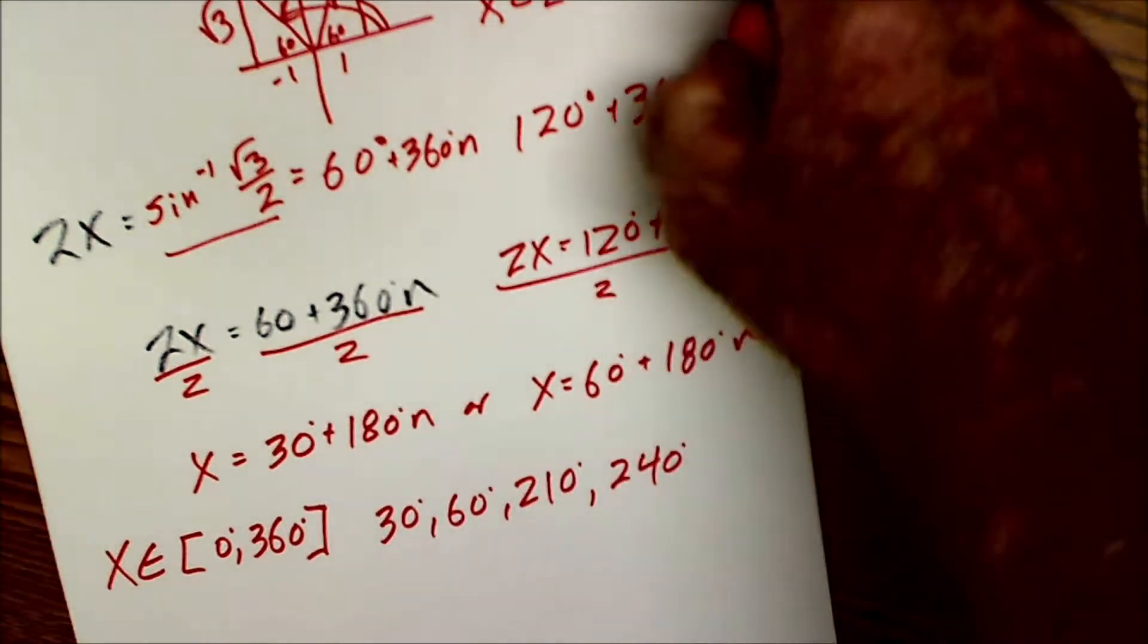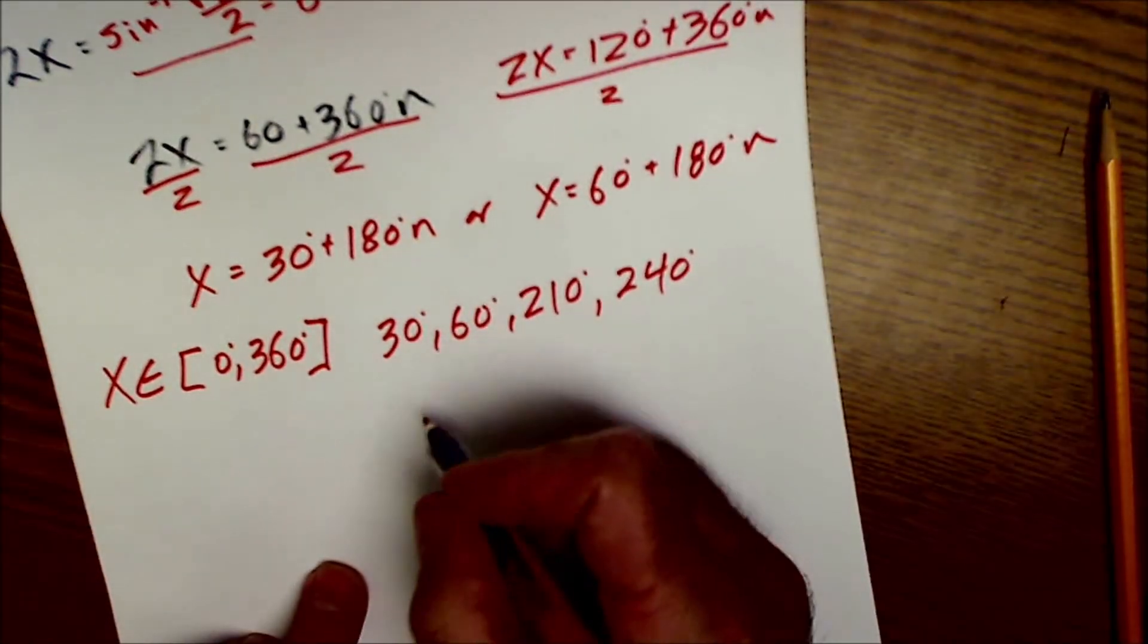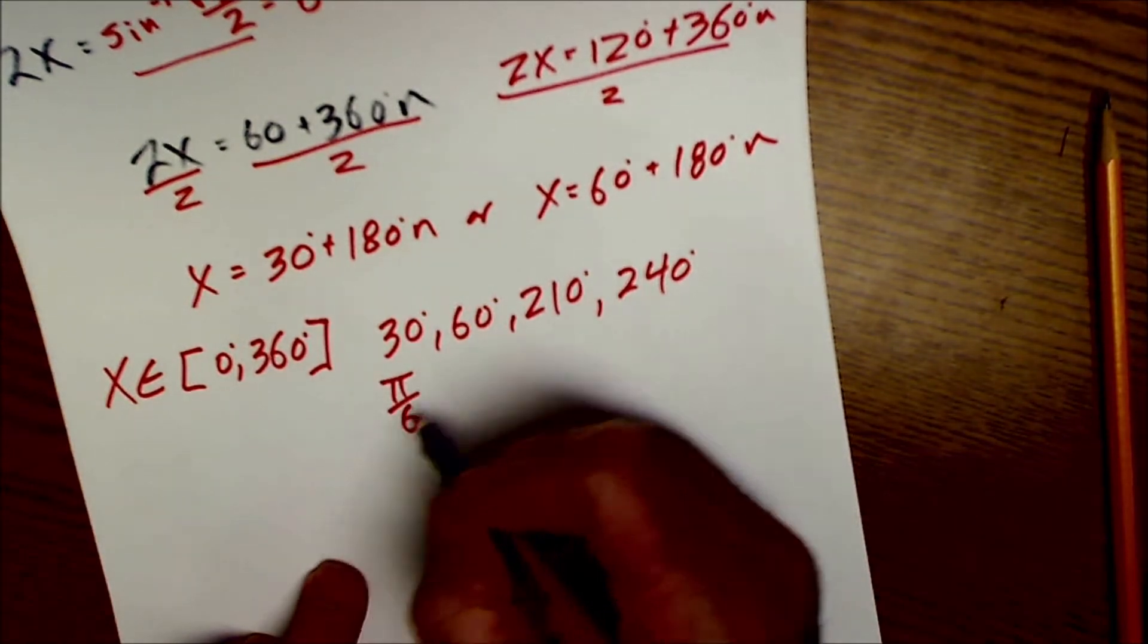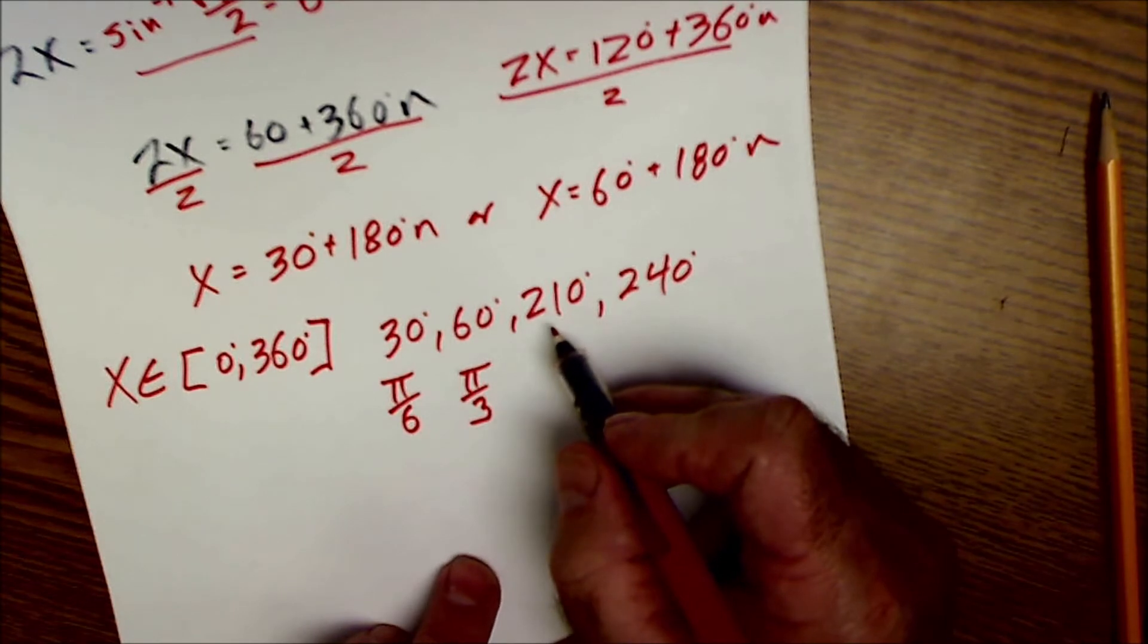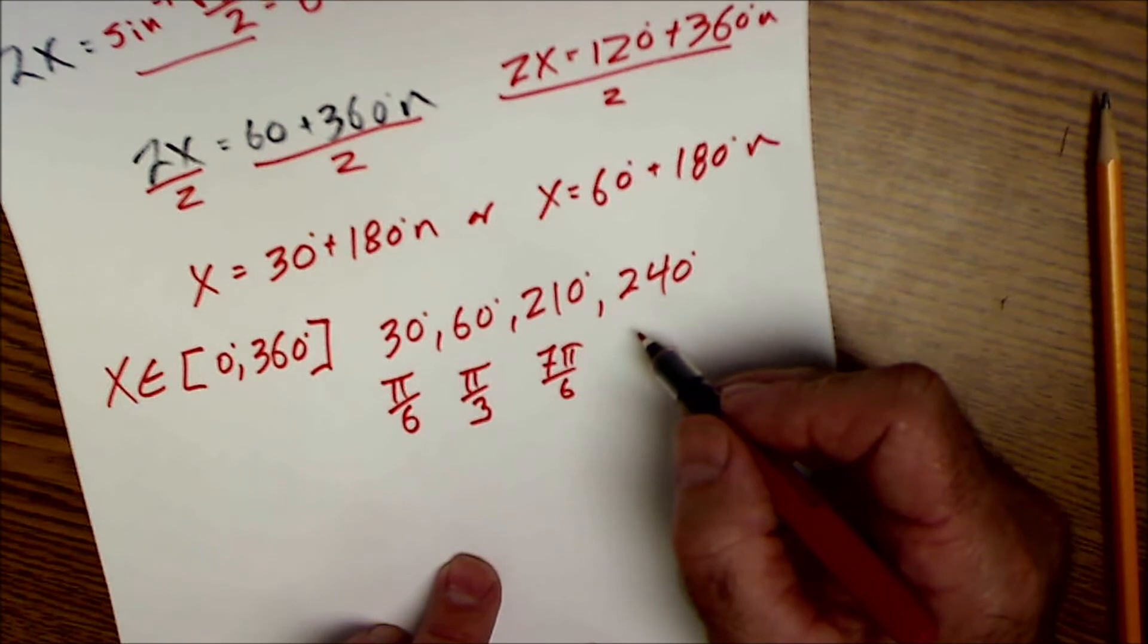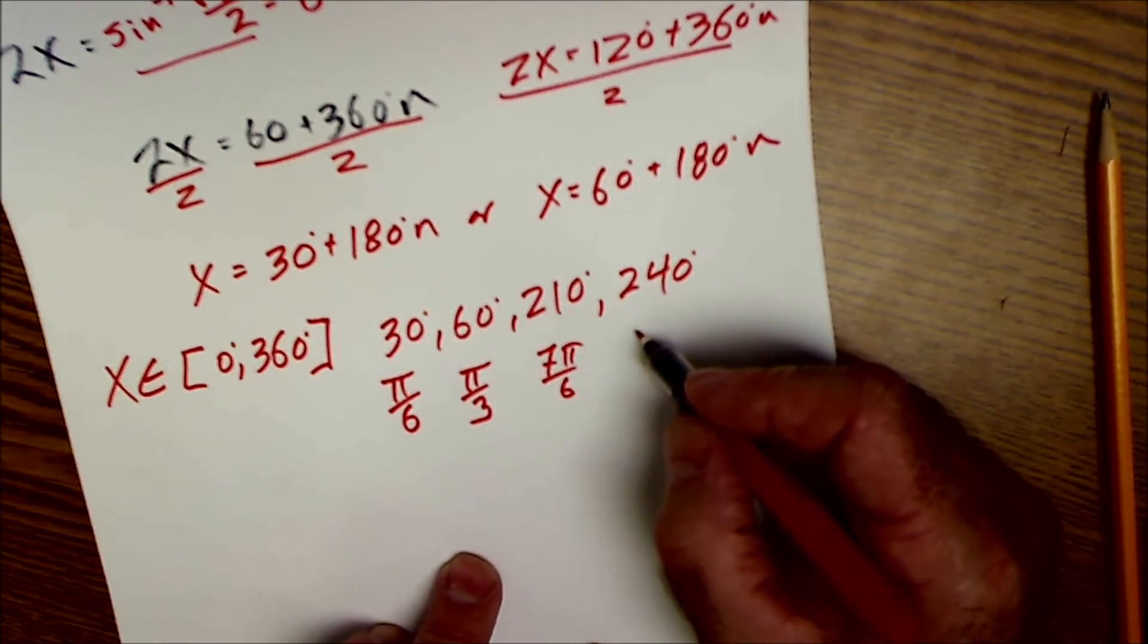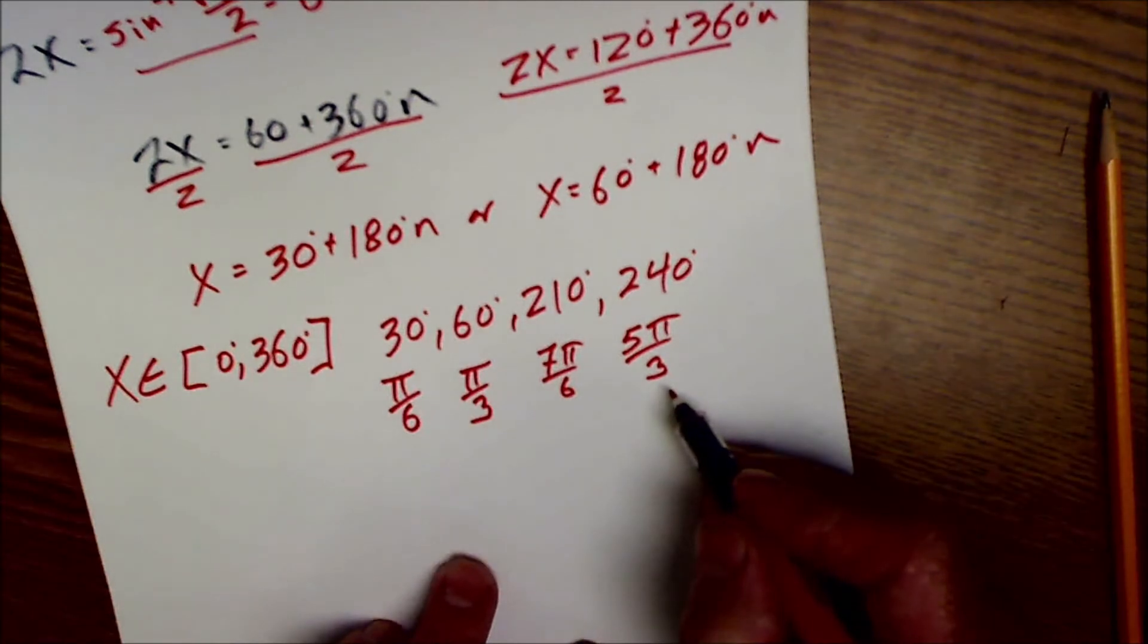If it were in radian measure, it would be the same solutions just in radians. This would be pi over 6, pi over 3, 7 pi over 6, and a 60 reference, 5 pi over 3. So if it were in radians, that would be your solution.